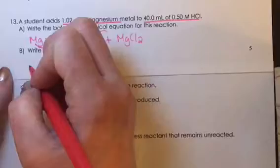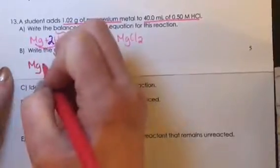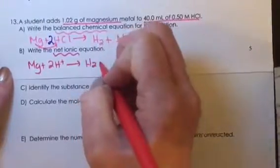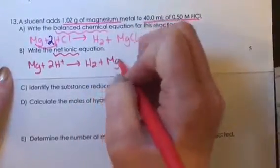So we're going to take the chlorine out of the equation, and what we're left with is magnesium plus 2 hydrogen ions produces hydrogen gas and then the magnesium ion.